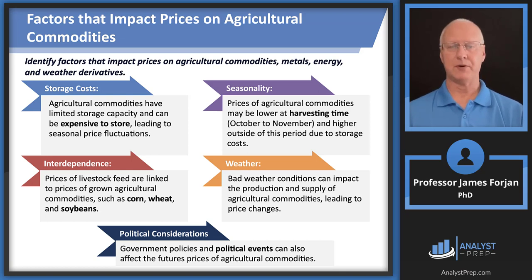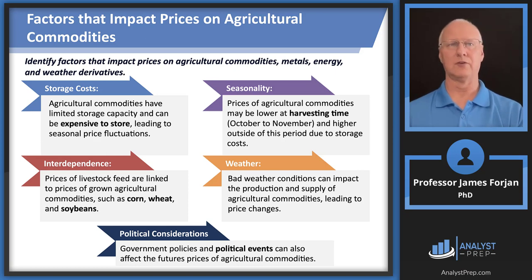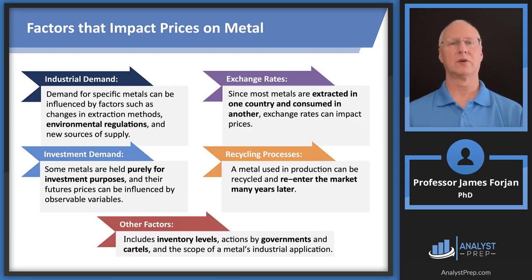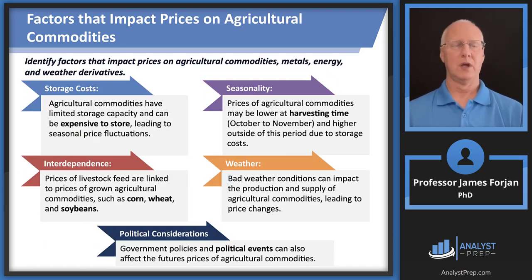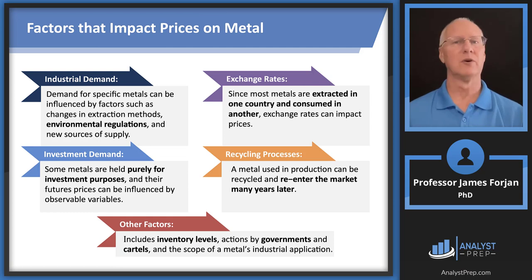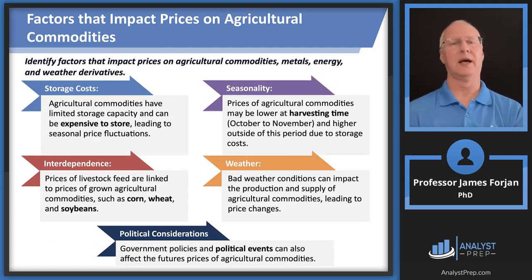The chapter identifies factors for different commodity types: agricultural, metal, energy, and weather. You can imagine good exam questions that say something like, here's a commodity characterized by these properties — is it most likely agricultural, metal, energy, or other?